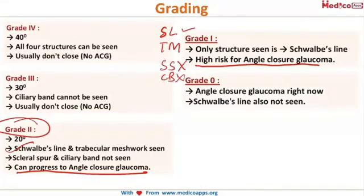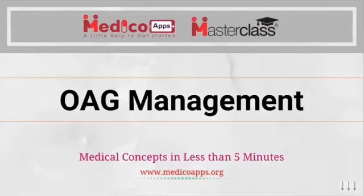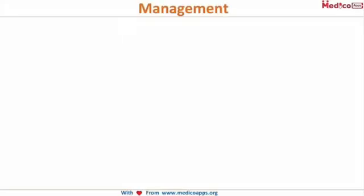Grade 0 means the patient is presently in an episode of angle closure — you cannot see anything, not even Schwalbe's line — and it is an emergency condition. Management of open angle glaucoma is mostly medical, while surgical management is primarily for angle closure, because medical management cannot open a closed angle.